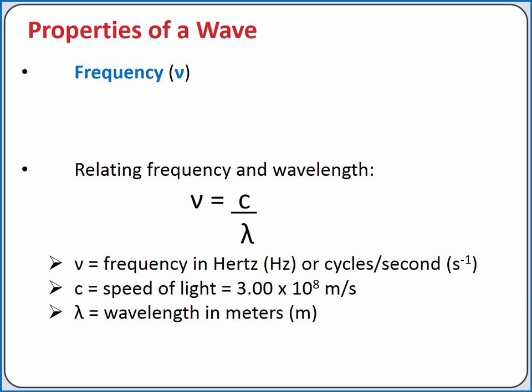Frequency and wavelength are inversely proportional according to the equation nu equals c divided by lambda. The Greek letter nu represents frequency, c represents the speed of light, and lambda represents wavelength.